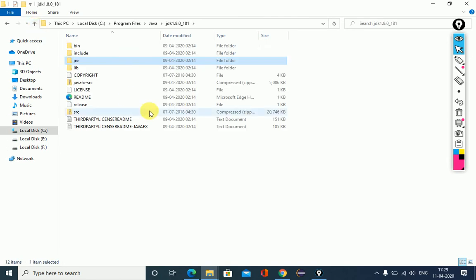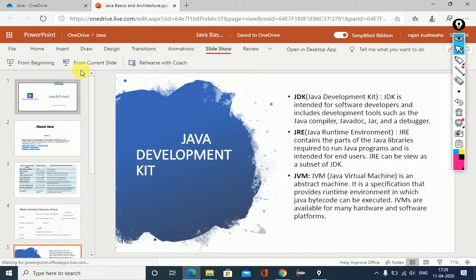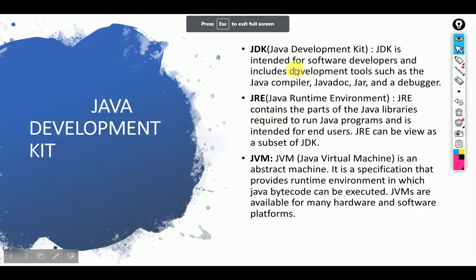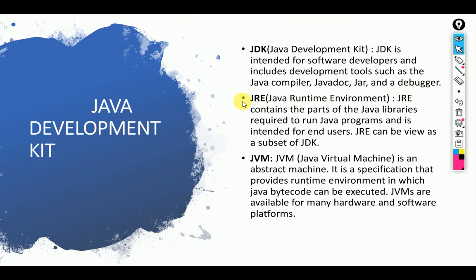The JRE folder provides some library files to support the runtime application environment. JDK — Java Development Kit — means the whole toolset, including the Java compiler, Javadoc, and debugger. JRE — Java Runtime Environment — provides the required libraries to run the Java program. JRE is a subset of JDK.